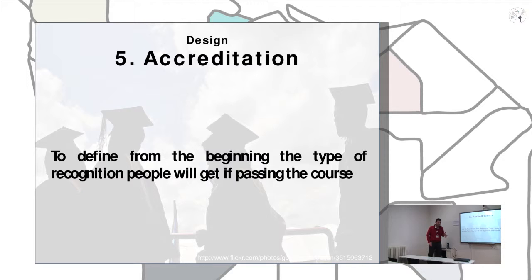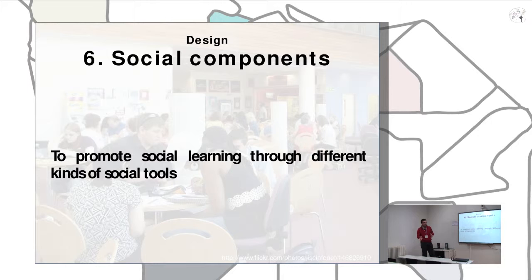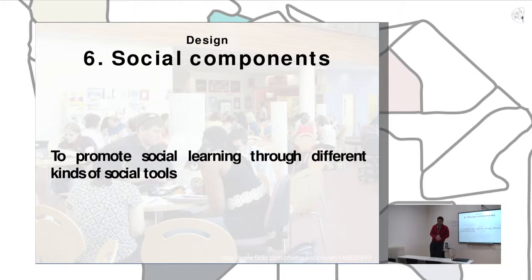Regarding social components: we had five social tools, and this is a trade-off. With many social tools, people may feel comfortable with those they use frequently, but on the other hand, hot topics can be diluted across all these social tools, making it harder for teachers and students to find the right contributions and meaningful discussions.